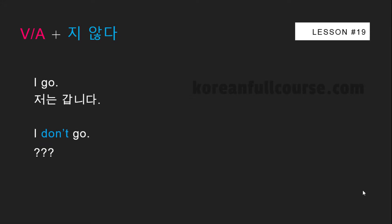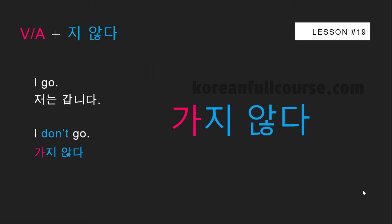How about 'I don't go'? First, we need to take the verb and leave only its stem. The next step is to attach 지 않다 to the verb stem. So now we have 가지 않다.